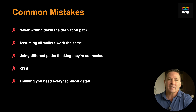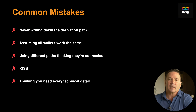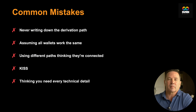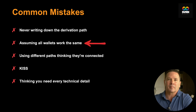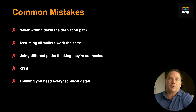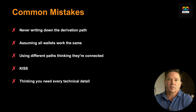Now let's talk about common mistakes. Mistake one: not recording the derivation path. You set up your wallet, record your seed phrase, five years later you try to recover it and have no idea what derivation path to use — the wallet says empty and now you're playing guessing games, which is nerve-wracking. Mistake two: assuming all wallets work the same way. They don't. A Trezor might default to one path, a Ledger another, a ColdCard something completely different. Don't assume — check.